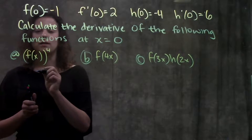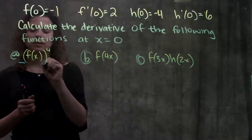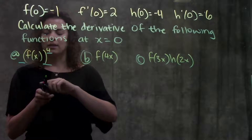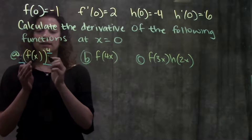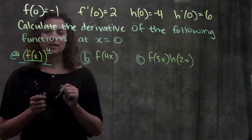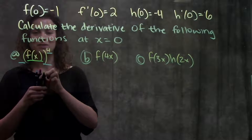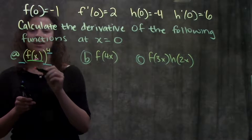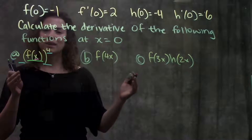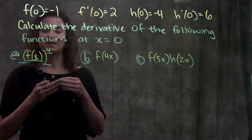So step one: I'm going to identify what my outermost function is. My outermost function is just this thing raised to the fourth power. Now I go inside — my inside function is just f of x. And actually in this problem, I have an even inner function: my innermost function is just this value x. Chain Rule says start with the outside, calculate the derivative, multiply by the derivative of each inside function.